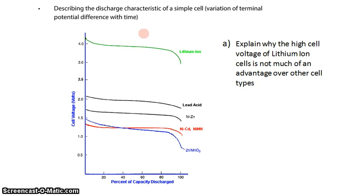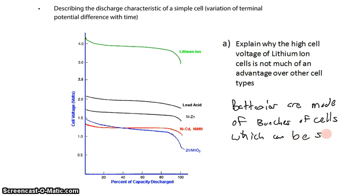The reason that it's not such an advantage to have double the cell voltage of the other types is that batteries are made of - they're actually called batteries of cells. A battery is a word for a group of things arranged together. So batteries are made up of bunches of cells which can be series or parallel.